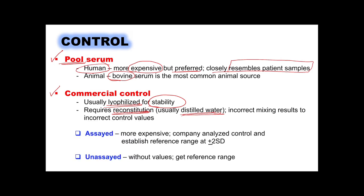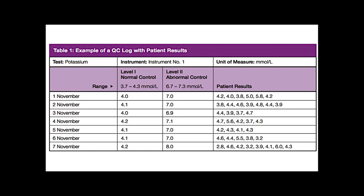For the two types of commercial controls, we have assayed and unassayed. Assayed controls are more expensive because the manufacturer has already established the reference ranges of the control values, normally set at 2 SD. Unassayed controls are cheaper — they are lyophilized, require reconstitution, and it is the laboratory that determines the reference range for that particular control solution.